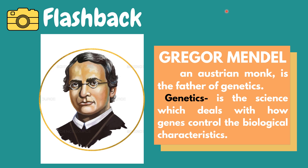He used the pea plant to observe the traits that can be inherited from a parent pea plant, just like the flower color, plant height, seed color, seed shape, pod color, pod shape, and flower position.